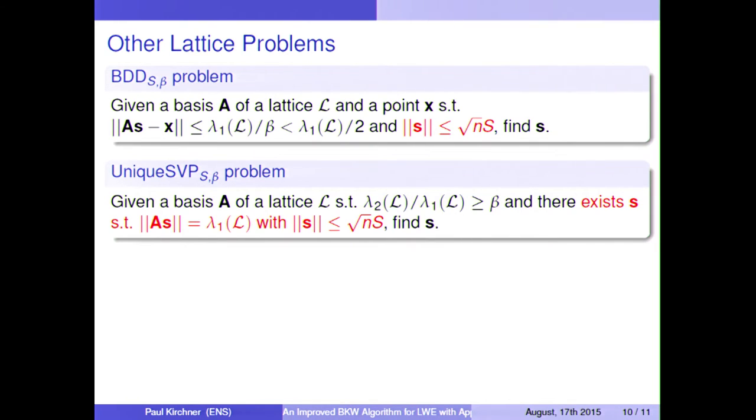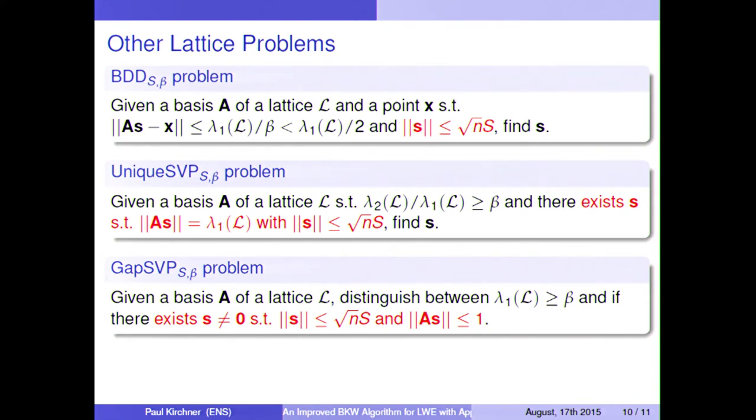There are also equivalents in this setting of all problems. So the unique SVP problem is where there is a short vector in a lattice which is much shorter than everything else, and the goal is to find this short vector. And if we add the condition that it can be expressed as a small linear combination of a known basis, then this is this problem. And we can also solve it efficiently.